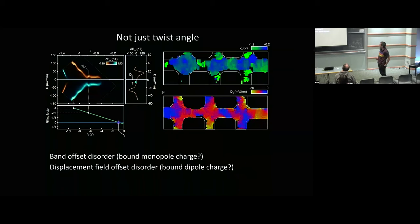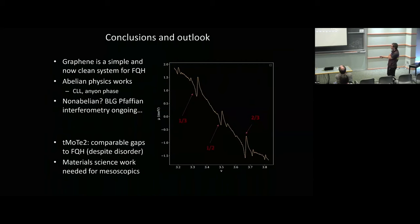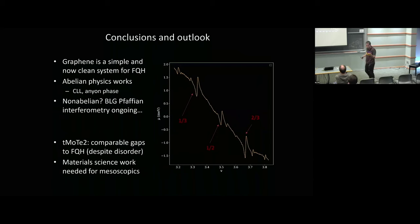To summarize: I've shown experiments in graphene, now a clean system for fractional quantum Hall experiments. The $64,000 question is what we can do with non-Abelian states — we have a robust presumed Pfaffian in Bernal bilayer graphene and are working on interferometry there. For twisted MoTe2, it's remarkable that you get gaps comparable to well-refined FQH systems despite significant disorder. There's a lot of material science work needed before we can do mesoscopics at the same level as FQH phases, but six months from now it could all be different.